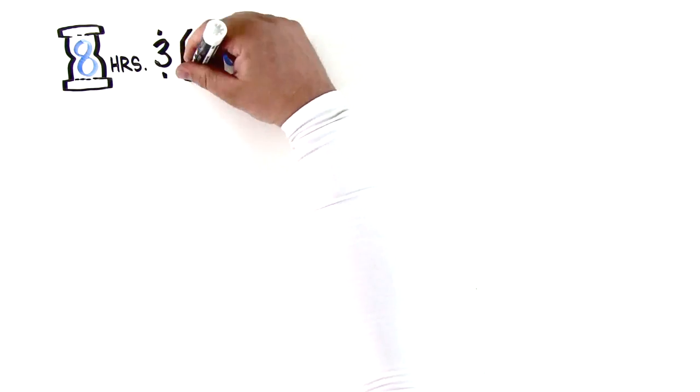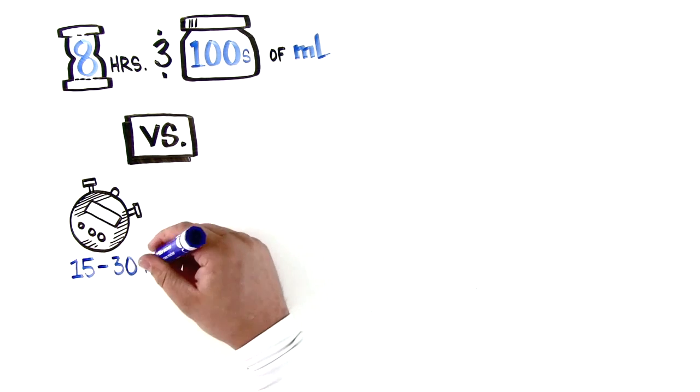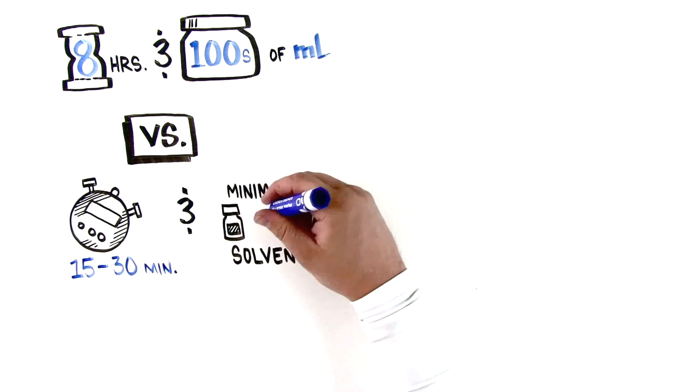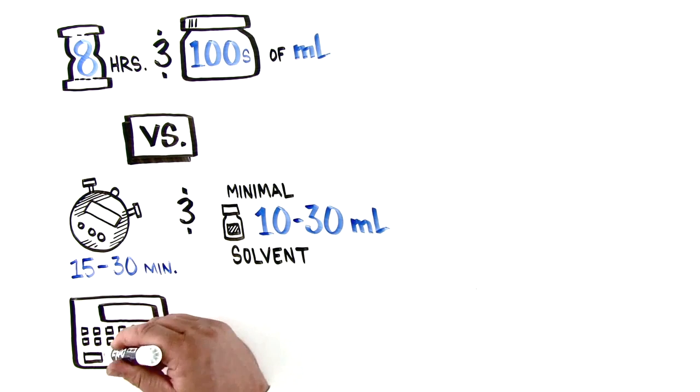While other methods take up to 8 hours and use hundreds of milliliters or more of solvent, the accelerated solvent extraction technique takes 15 to 30 minutes and requires minimal solvent, typically 10 to 30 milliliters, depending on the application. Because it is automated, reproducibility is improved over traditional methods.